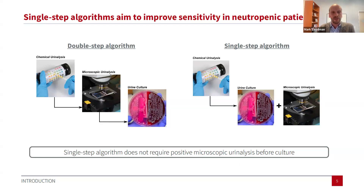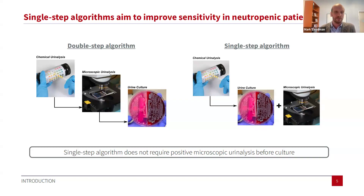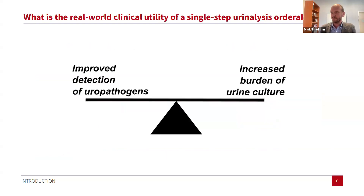As a result, there's an alternative single-step algorithm that has been proposed and adopted at many institutions, including our own. In this algorithm, any sample positive by chemical urinalysis proceeds directly to urine culture, plus or minus microscopic urinalysis — it does not require a positive microscopic urinalysis before culture. However, there have not been prior publications demonstrating the real-world clinical utility of this single-step reflex strategy. How much does it actually improve the detection of uropathogens, and how much does it increase the burden of urine culture? That is the question we wanted to answer.